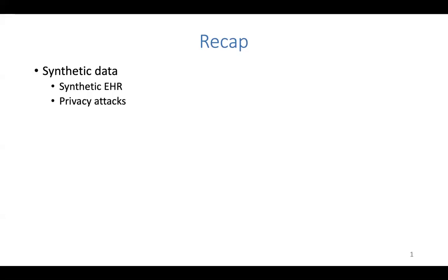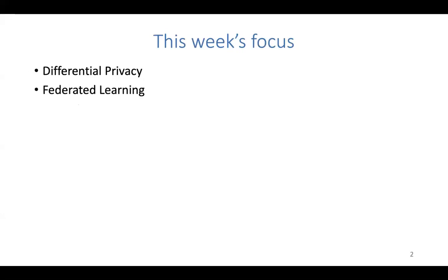We also spent time on privacy attacks, specifically two examples: membership inference and attribute disclosure. I said at the end of last class that I wanted to talk about differential privacy, so today we'll cover two things — differential privacy and federated learning. If we run out of time, we can continue federated learning on Thursday along with the project specs.